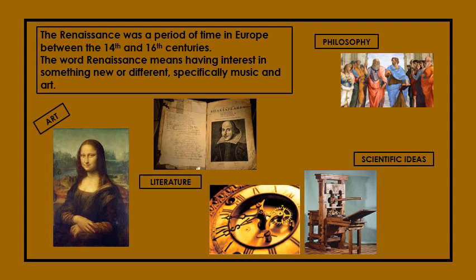Renaissance means finding something different, something new and interesting — changing the way of learning new things about music and art specifically. There were different types of music and art techniques and methods introduced during this time. The Renaissance took place between the 14th and 16th centuries and became very important for the change in art, literature, philosophy, and scientific ideas.